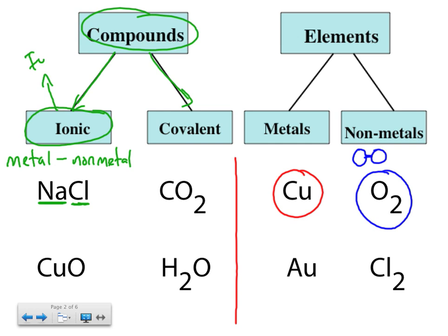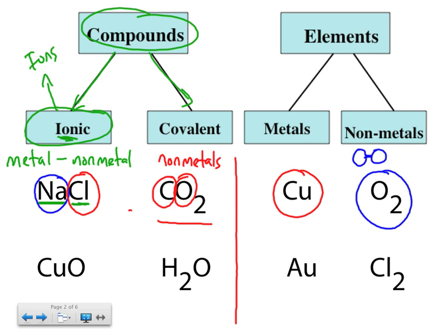If you look at your periodic table, you can work out whether something is ionic by looking whether there is a metal. In this case, sodium is a metal, and the other element, chlorine, is a non-metal. If we come over and look at this formula here, you can see that there are indeed two different elements as a compound. Carbon is a non-metal, and so is oxygen. So when you have non-metals bonded together in a compound, that compound is a covalent compound.